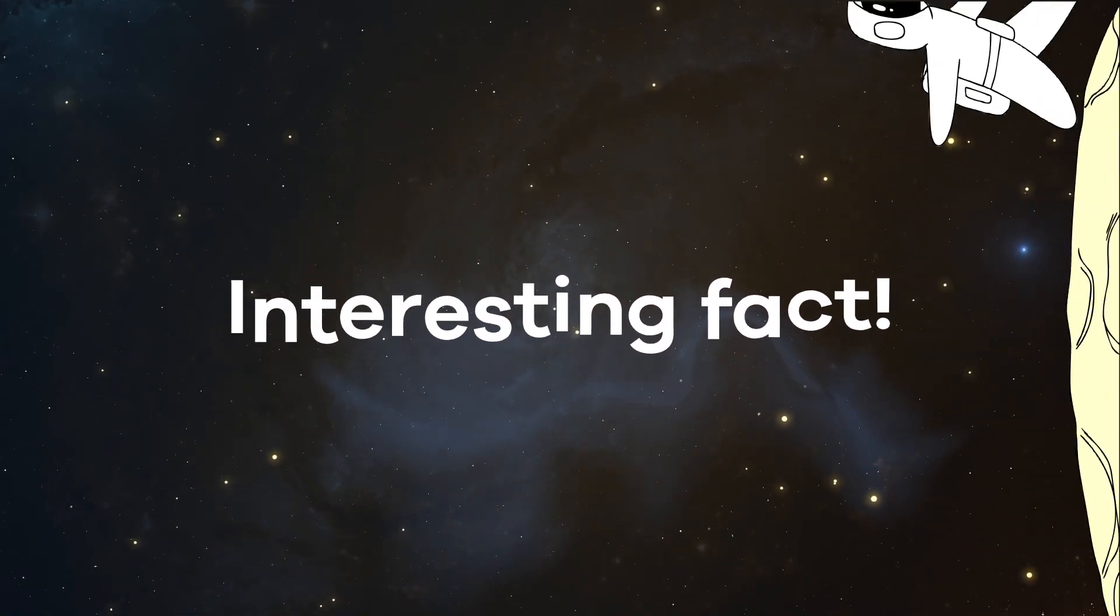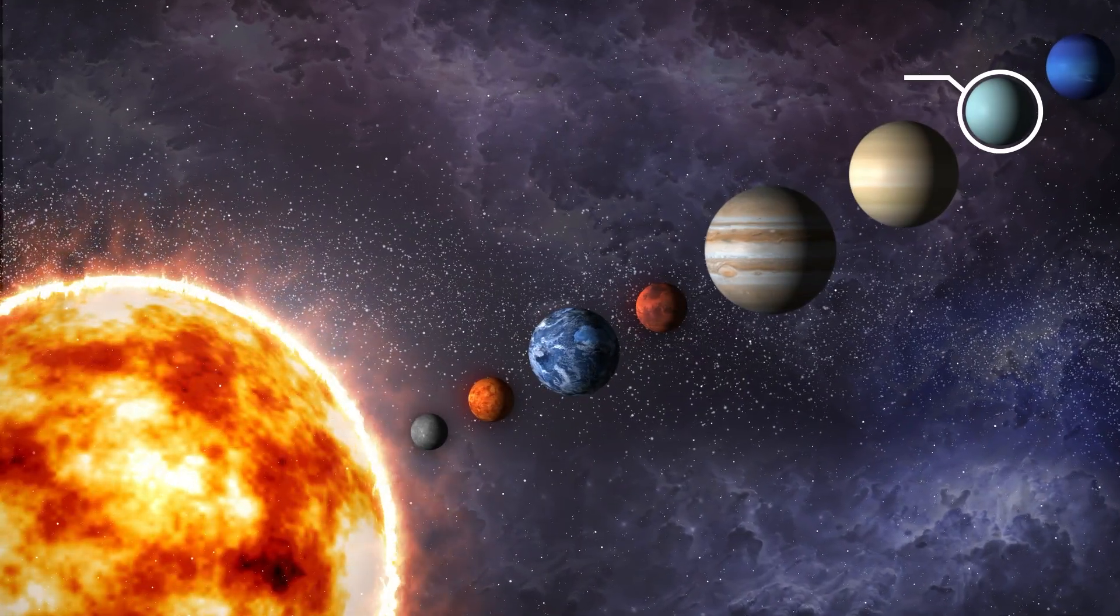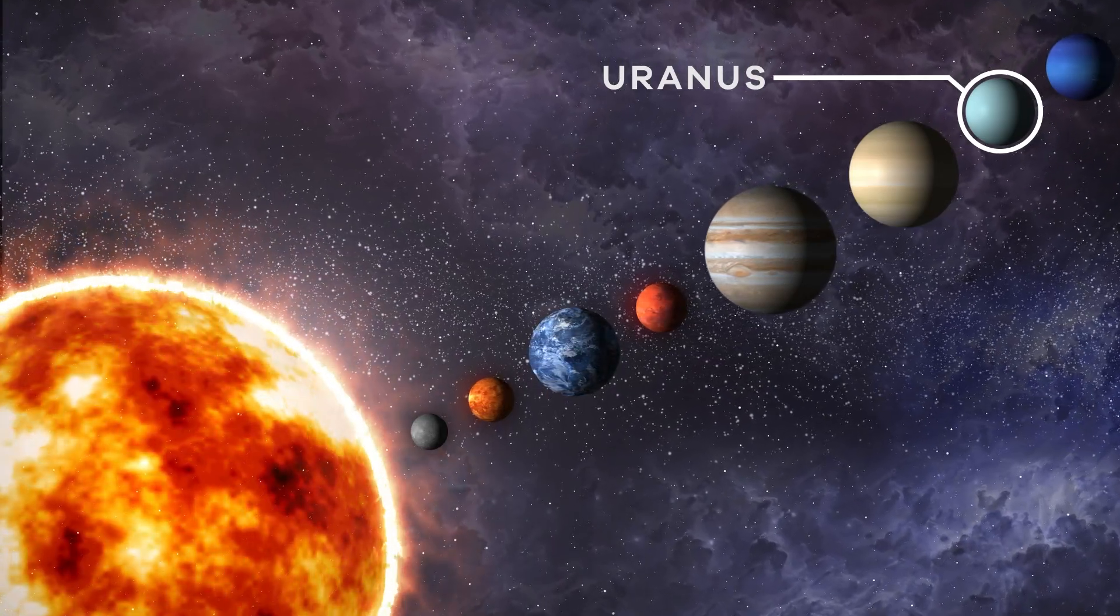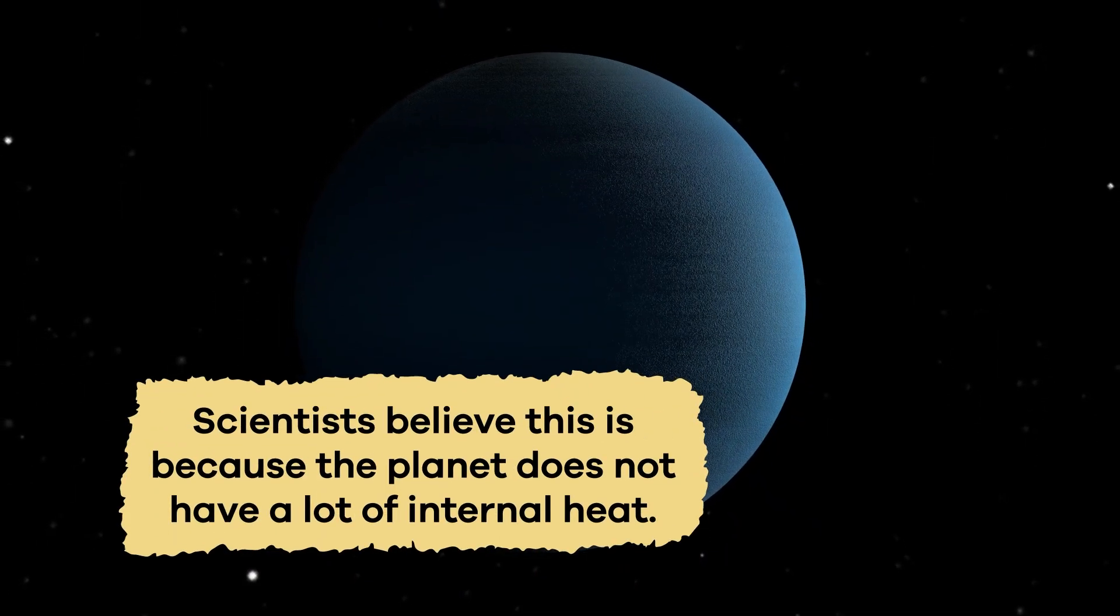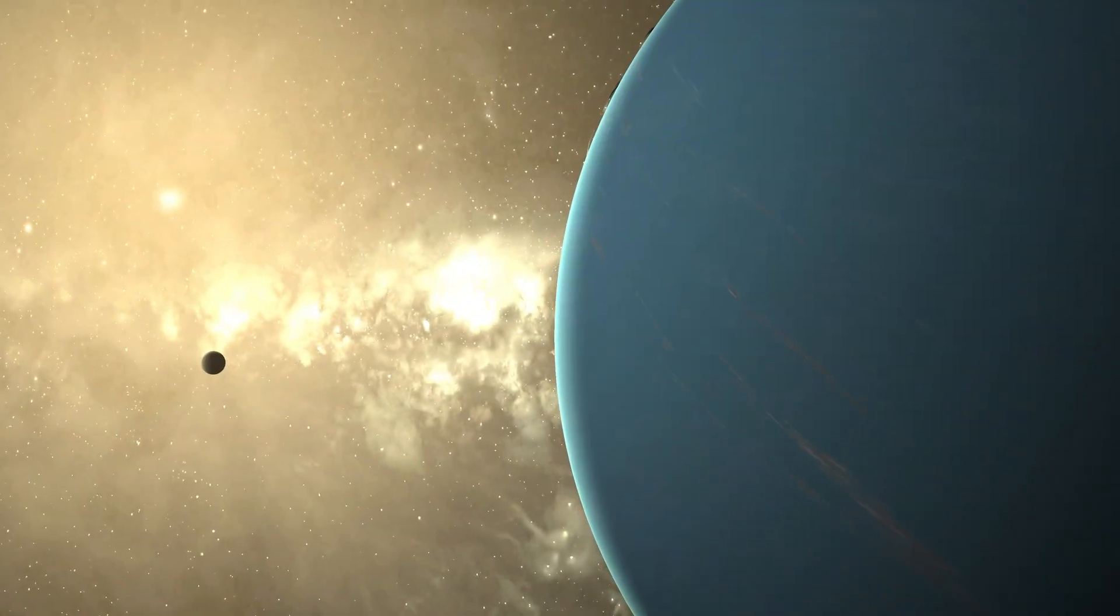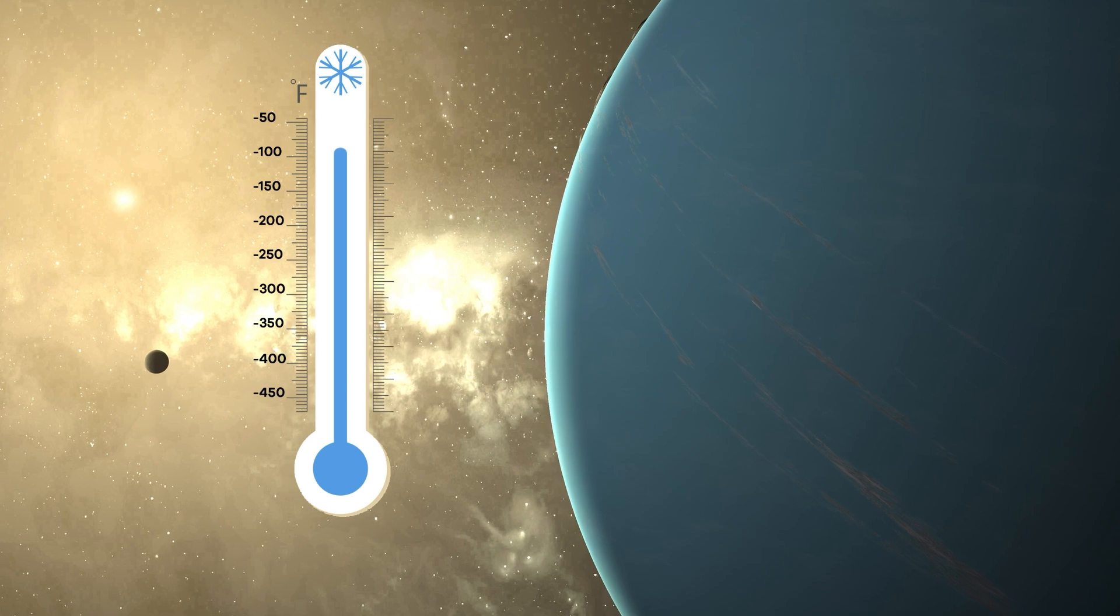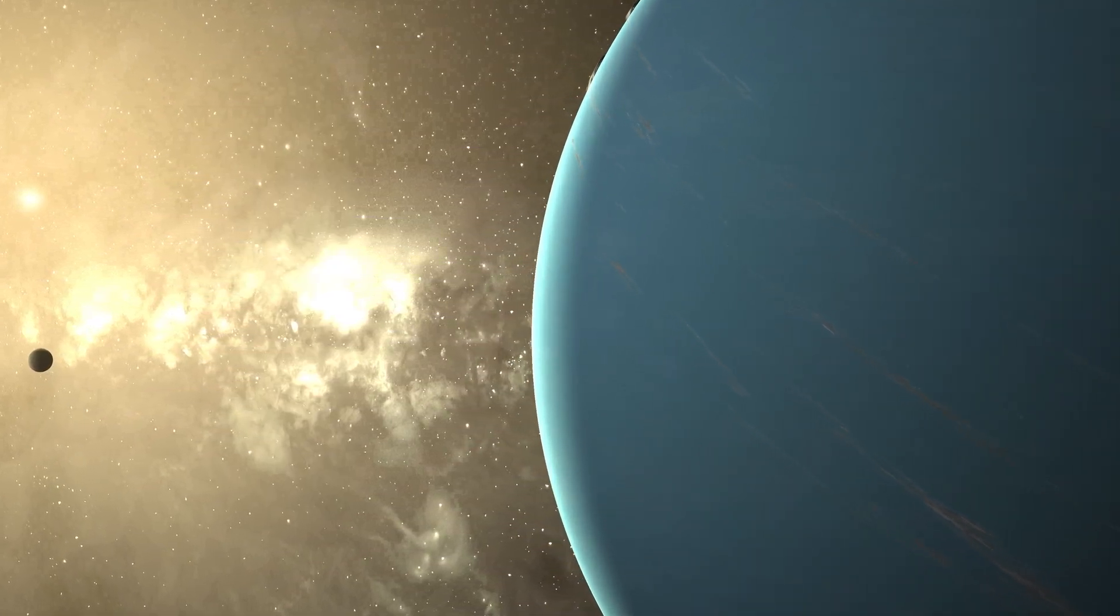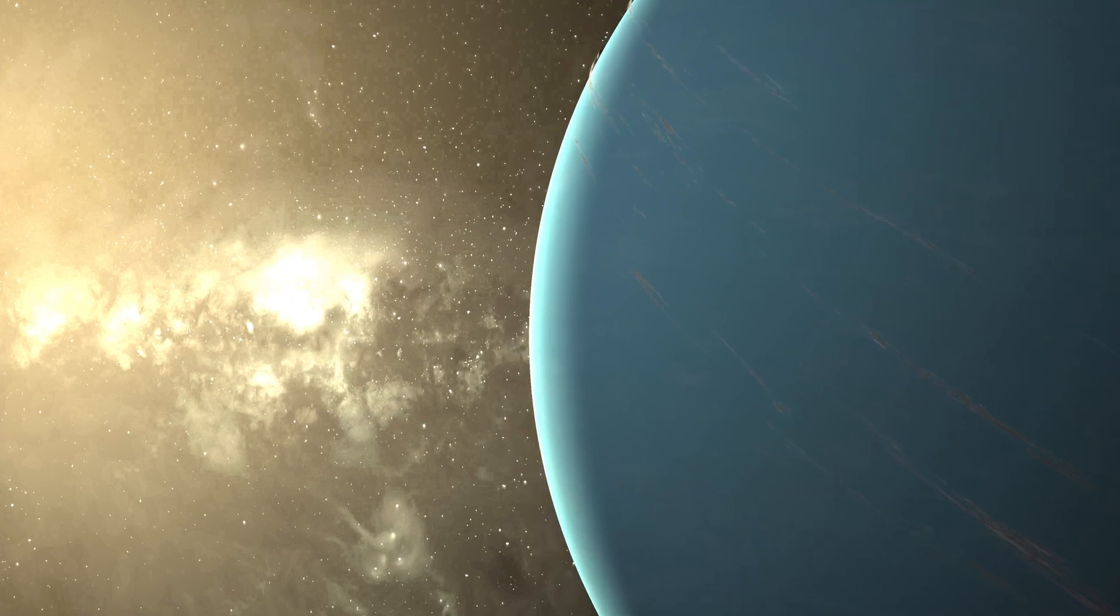Here's an interesting fact about Uranus. It is the coldest planet in our solar system, even though it is not the farthest away from the Sun. Scientists believe this is because the planet does not have a lot of internal heat. And with temperatures that can drop to around negative 357 degrees Fahrenheit, Uranus is one of the most difficult planets to study.